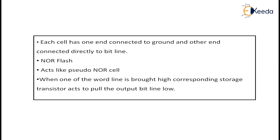Each cell of your flash memory has one end that will be connected to the ground and the other end will be connected directly to the bit line. This NOR flash usually acts like a normal pseudo NOR.